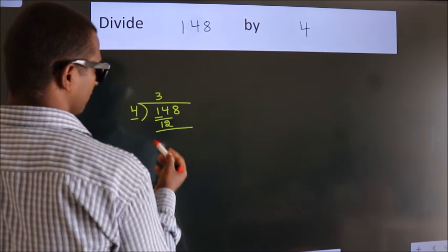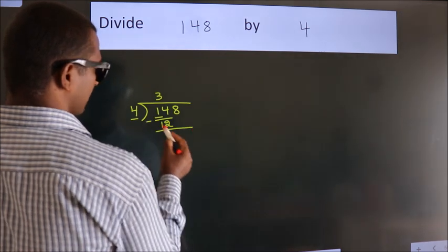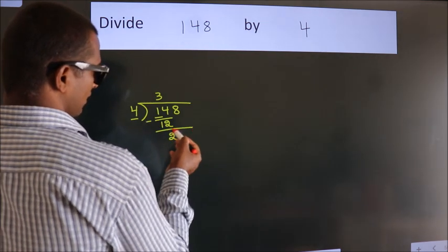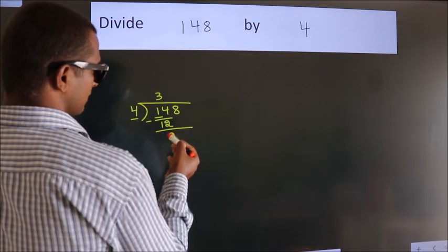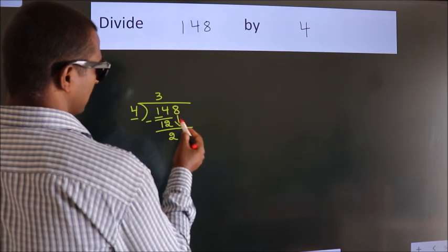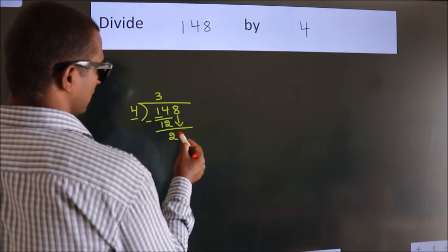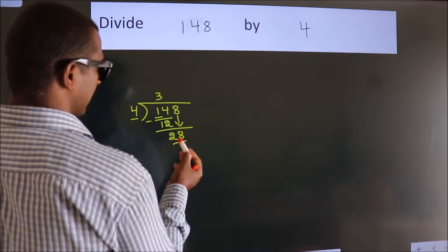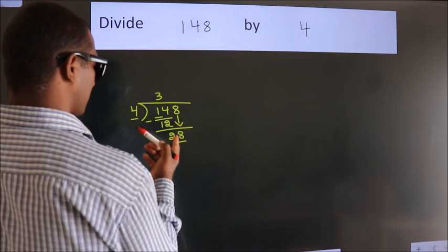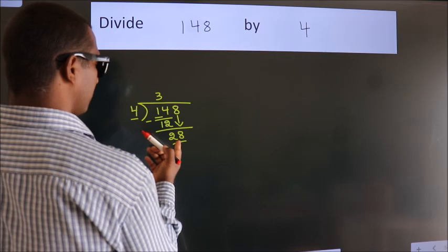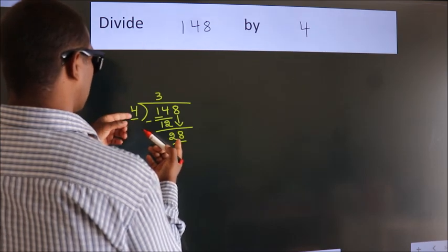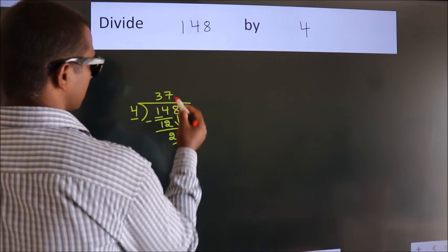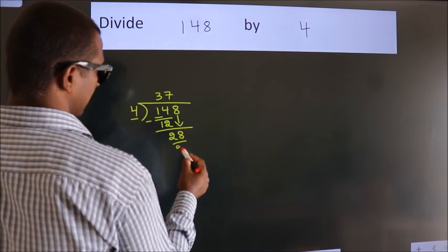Now we should subtract, and we get 2. After this, bring down the beside number — so 8 down, giving us 28. When do we get 28 in the 4 times table? 4 sevens is 28.